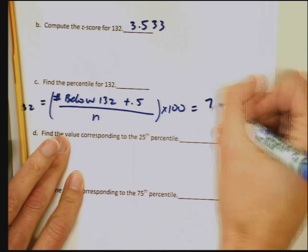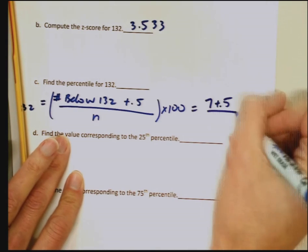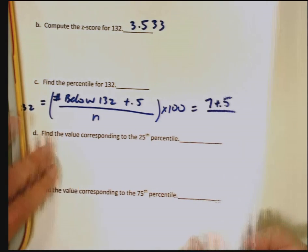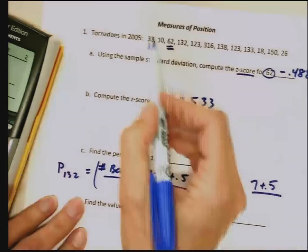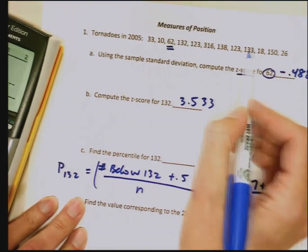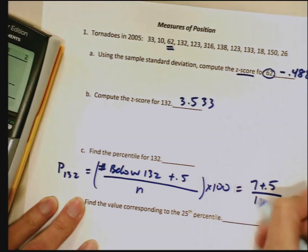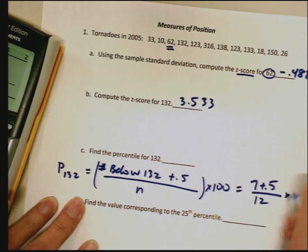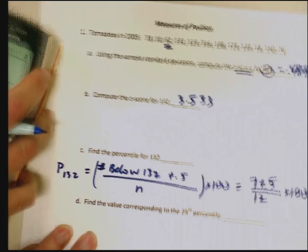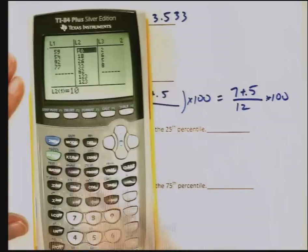So for ours, this is 7 plus 0.5 divided by the total number of values that we have, which I never did count. 1, 2, 3, 4, 5, 6, 7, 8, 9, 10, 11, 12. So divided by 12 times 100. I can just type this right in. So 7.5 divided by 12 is 0.625 times 100.